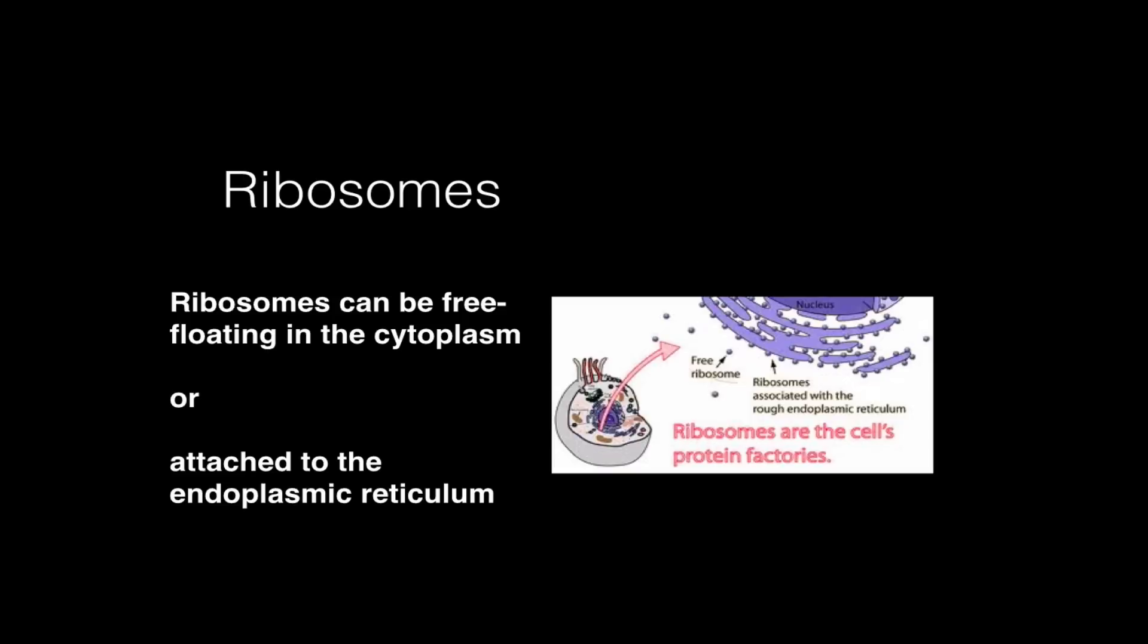Now ribosomes can be free-floating in the cytoplasm of the cell or they can be attached to another cell structure called the endoplasmic reticulum. When the endoplasmic reticulum has ribosomes attached it's called the rough ER, but we'll talk about that in the next video cast.